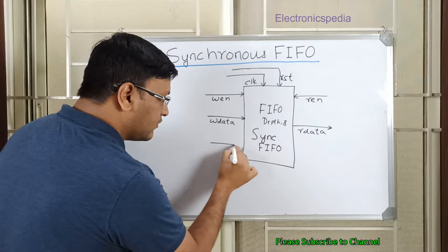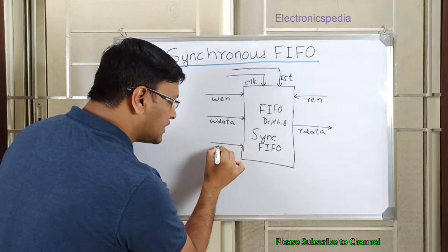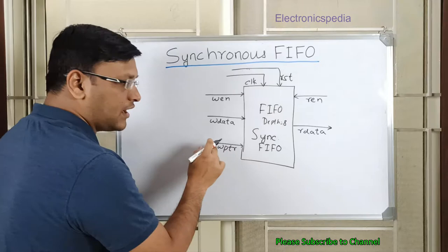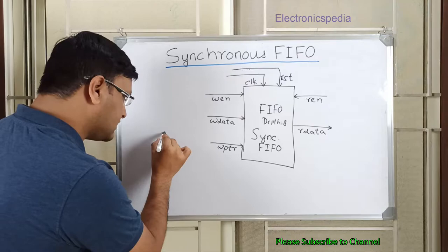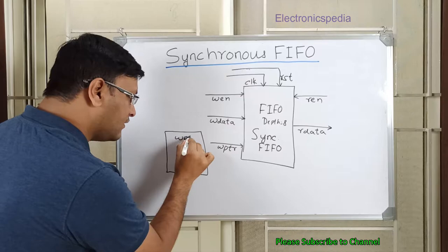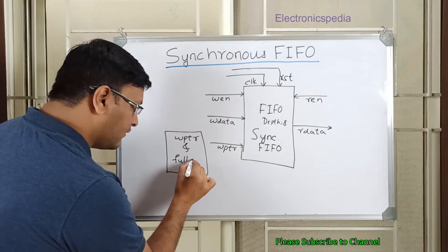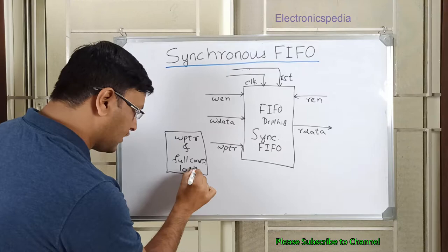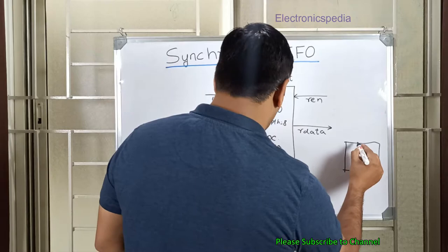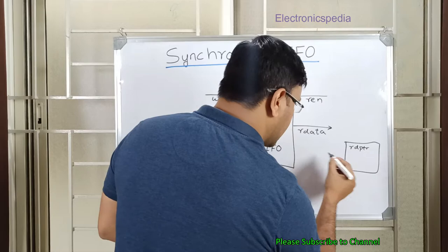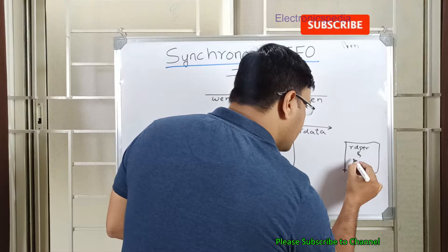In some FIFO designs you provide a write address or write pointer — address and pointer refer to the same thing. For the FIFO design we need a logic block called the write pointer and full condition generation block. This block generates the write pointer as well as the full condition. Similarly, on the read side we have a read pointer (rd_ptr or r_ptr) and an empty condition generation logic block.